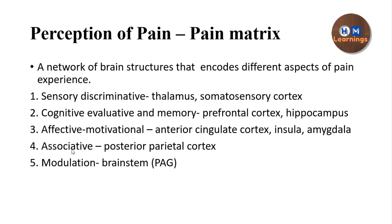So pain matrix theory states that because pain is a complex sensation, different aspects of pain must be encoded in order to feel pain as a whole. Because the body responds to pain with autonomic and neuroendocrine responses, and pain affects motivation, cognition, and decision-making, the pain matrix theory explains that efferents from the ascending pathway send collaterals to different areas, which work together to give you the sensation of pain as a whole.